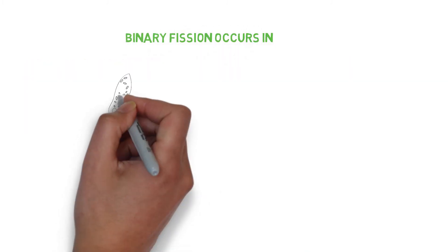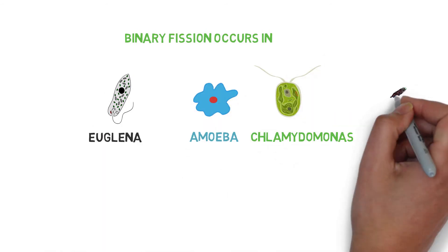This type of reproduction occurs in Euglena, Amoeba, Clementomonas, and Bacteria.